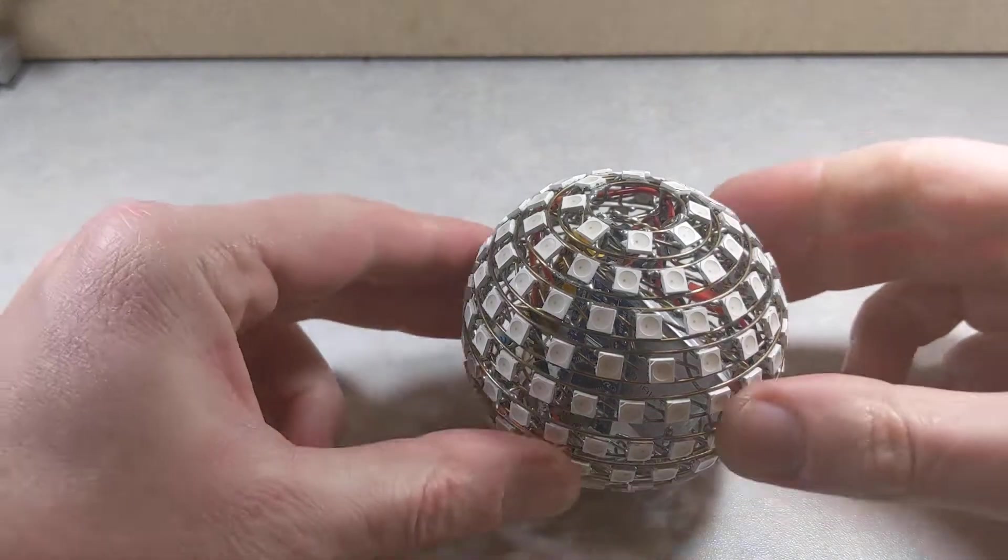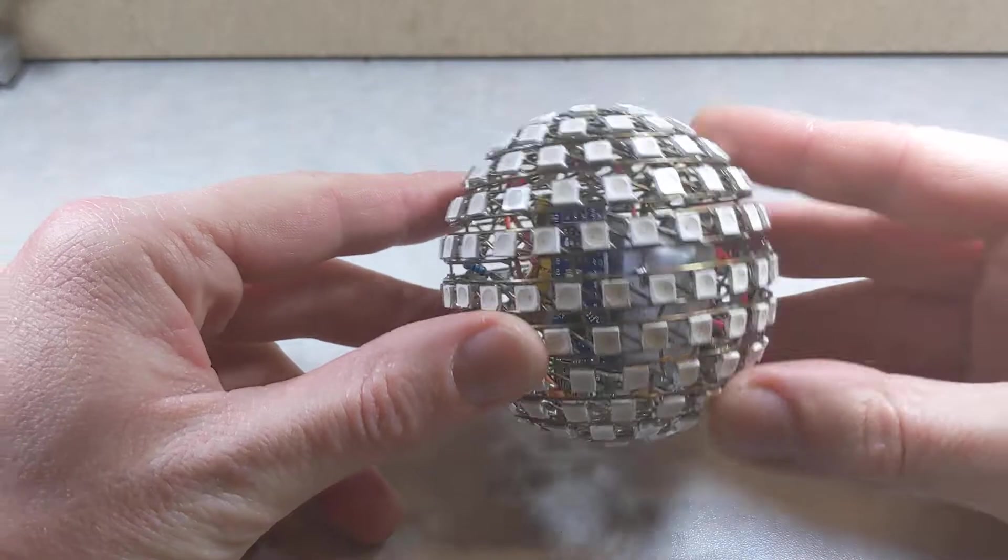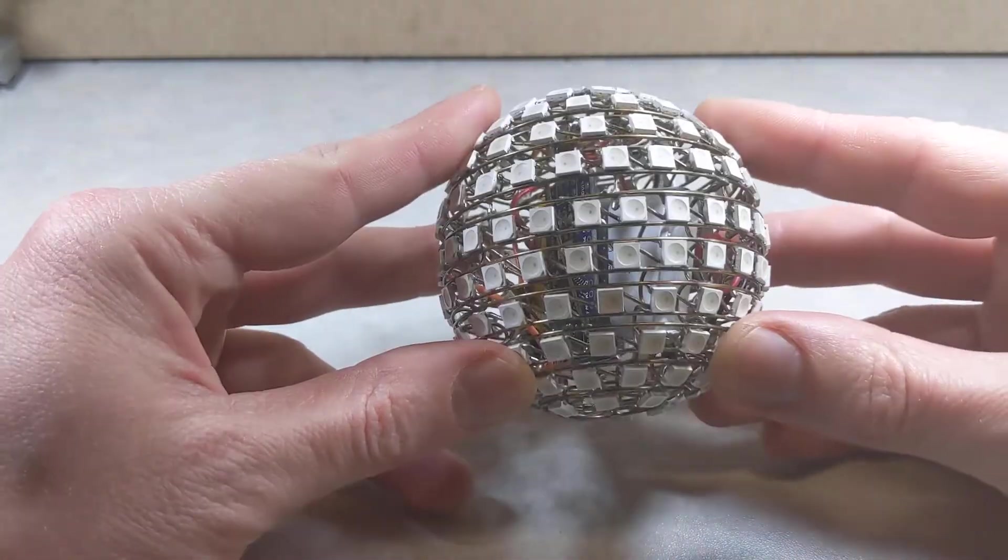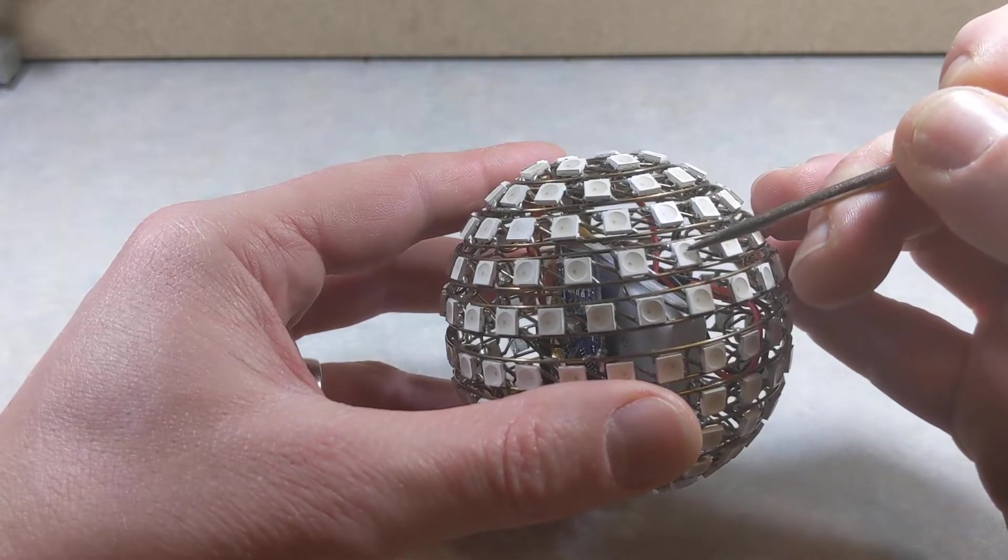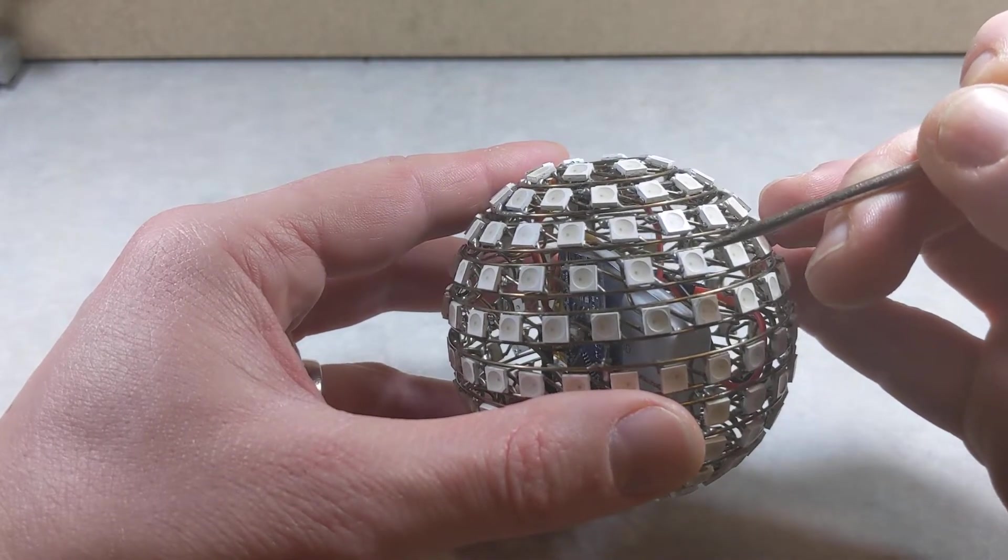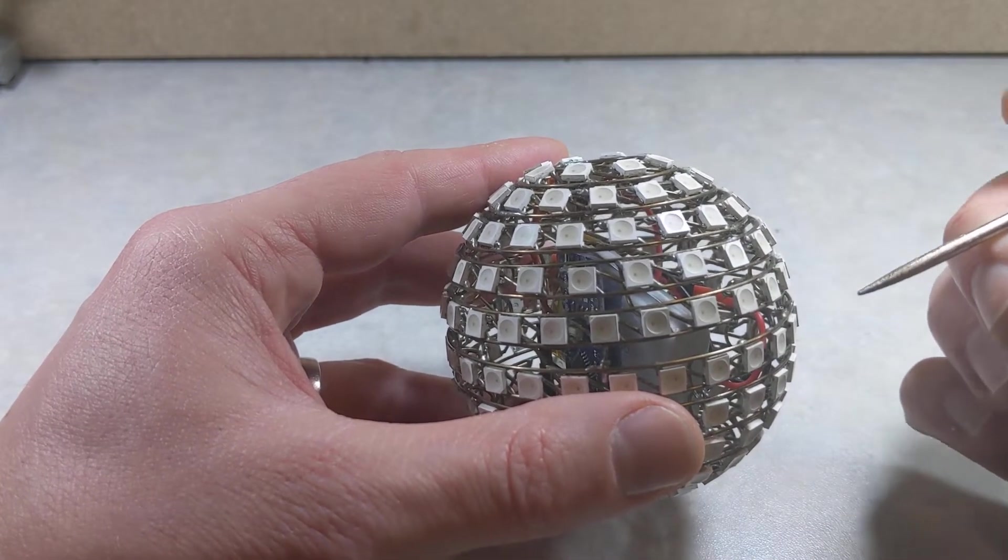Hello everyone. This is a project I made some time ago. It's an LED sphere made of 194 single LEDs. So each one of these little white dots is actually an LED. It can turn to any color possible.